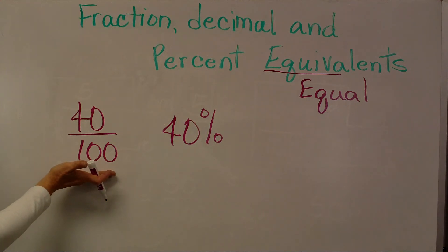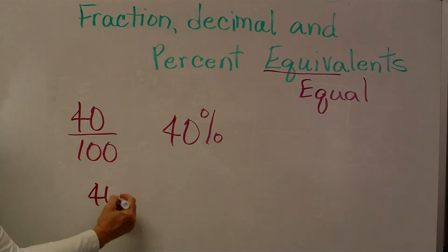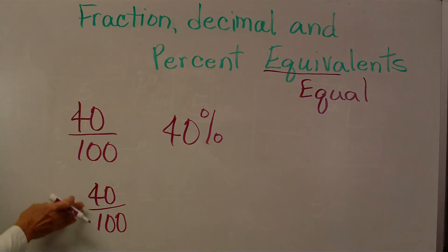This fraction has to be reduced. 40 and 100 have something that is in common, a common factor. We could start with 2, but that's not the greatest common factor. Let's think, what numbers could reduce 40 and 100?